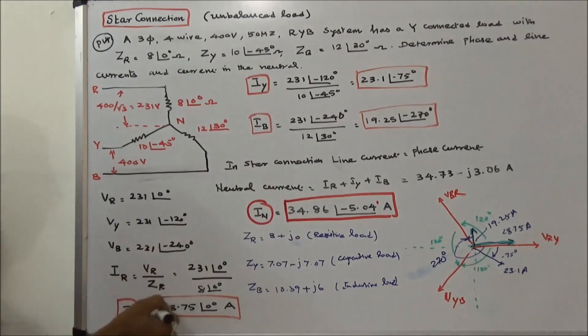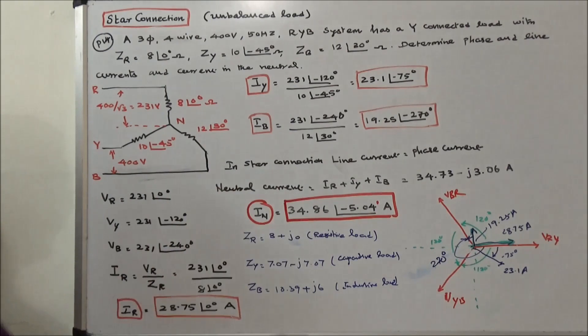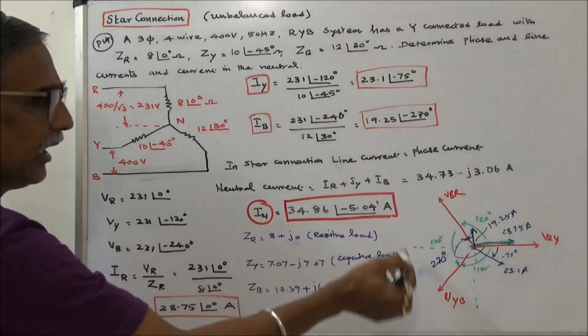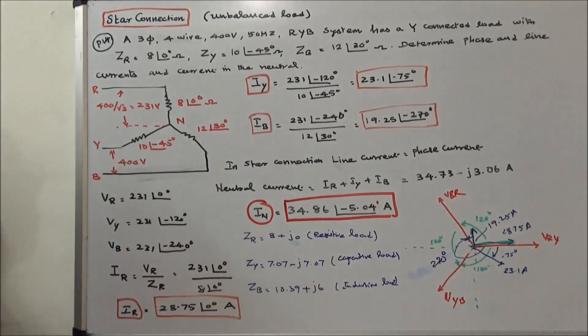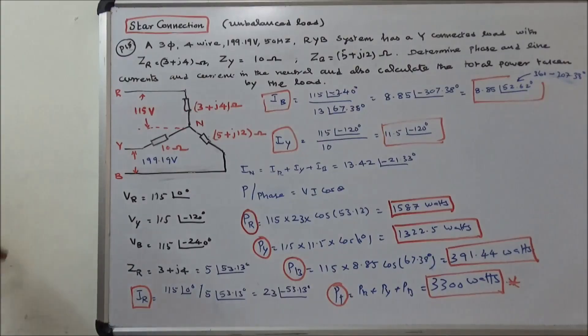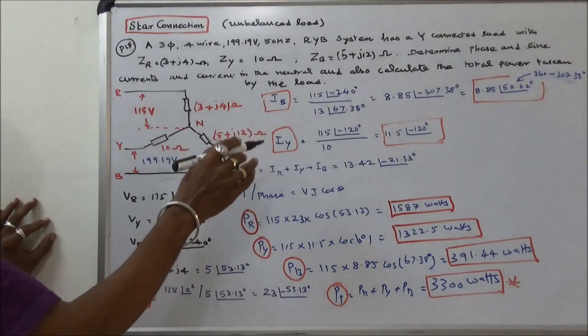We calculated IR, IY, IB and the neutral current, and this is the phasor diagram. Second problem.